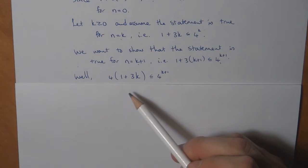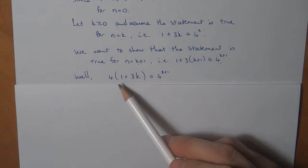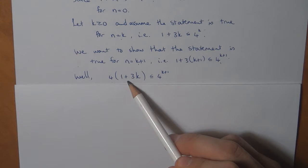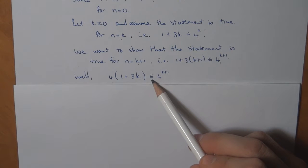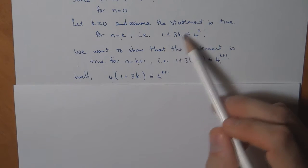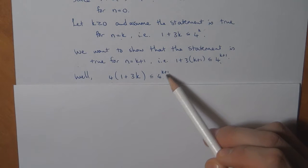Well, let's see what is happening on the left. If I multiply the left by 4, I get it less than or equal to the left here in my induction hypothesis. I get that less than or equal to 4 to the k plus 1.